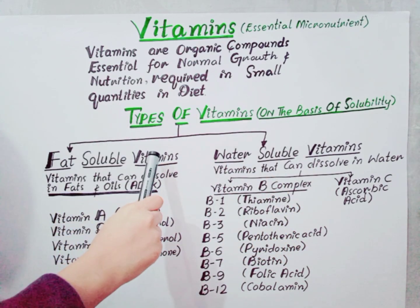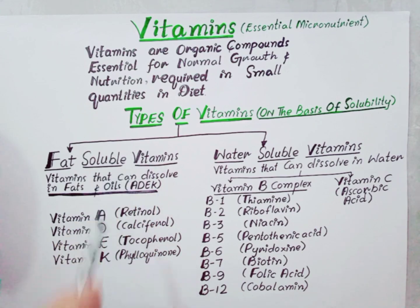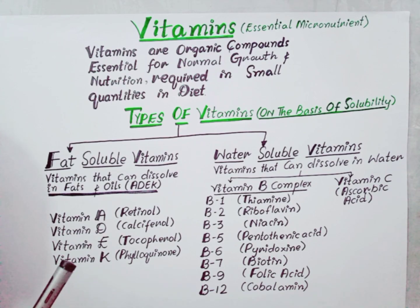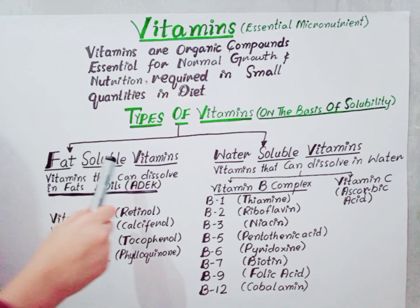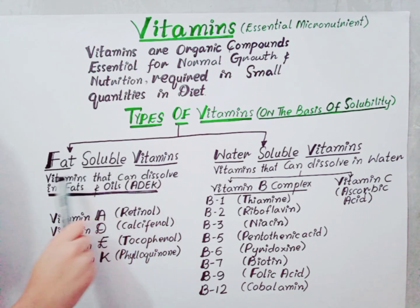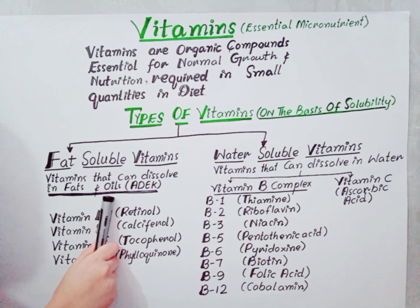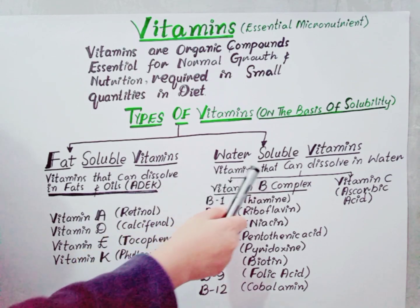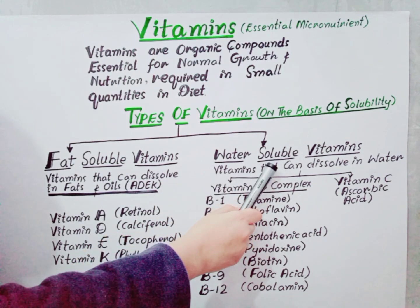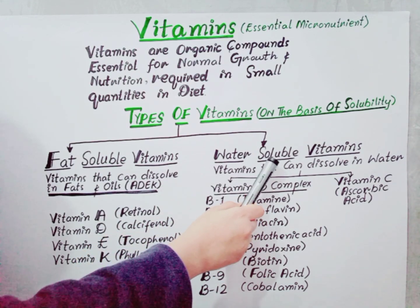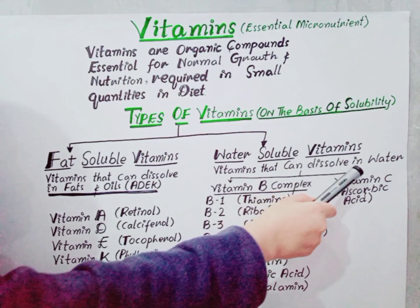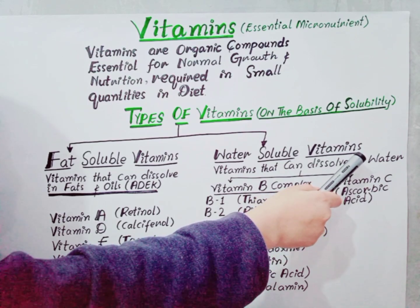The fat-soluble vitamins absorb along with fats in the diet and are stored in body tissues and in the liver. These can be dissolved in fats and oils, while the water-soluble vitamins are those which can dissolve in water.